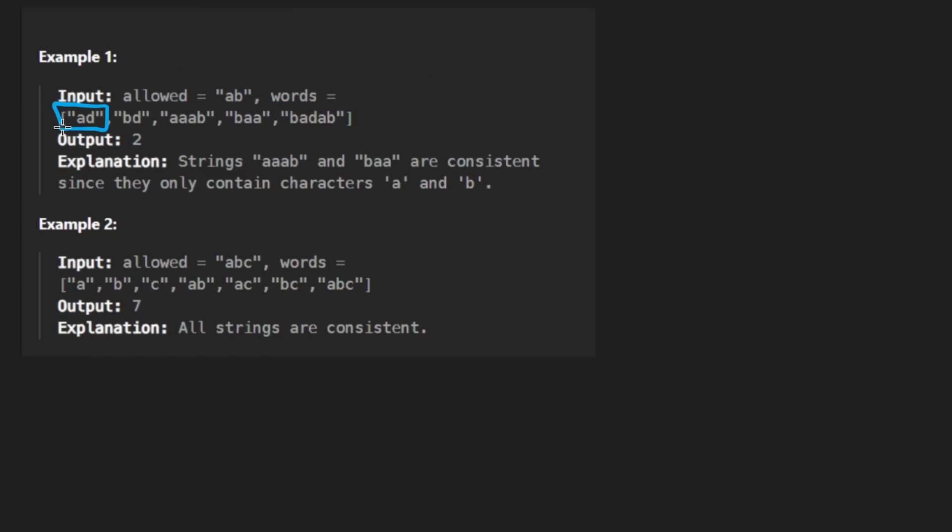You look at the first word, can't do it. We have the a, it's in the allowed string, but we don't have the D so we can't form this word. There's a joke somewhere in there, but I think I'll avoid it for now. Same thing with this word. Can't make it this word. We can, we can use three occurrences of lowercase a and then B same thing with this one, but not this one. So only two words we return to.